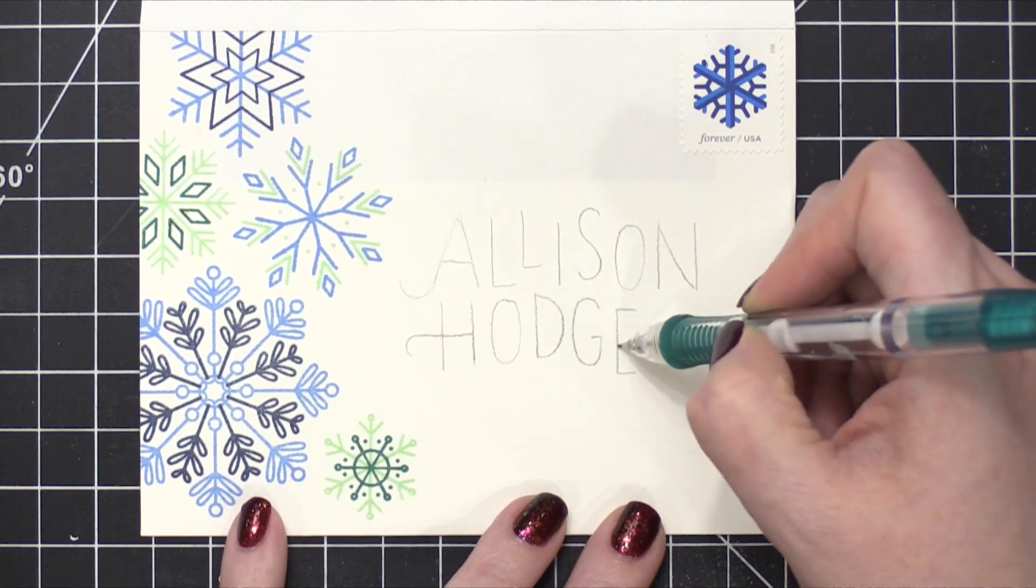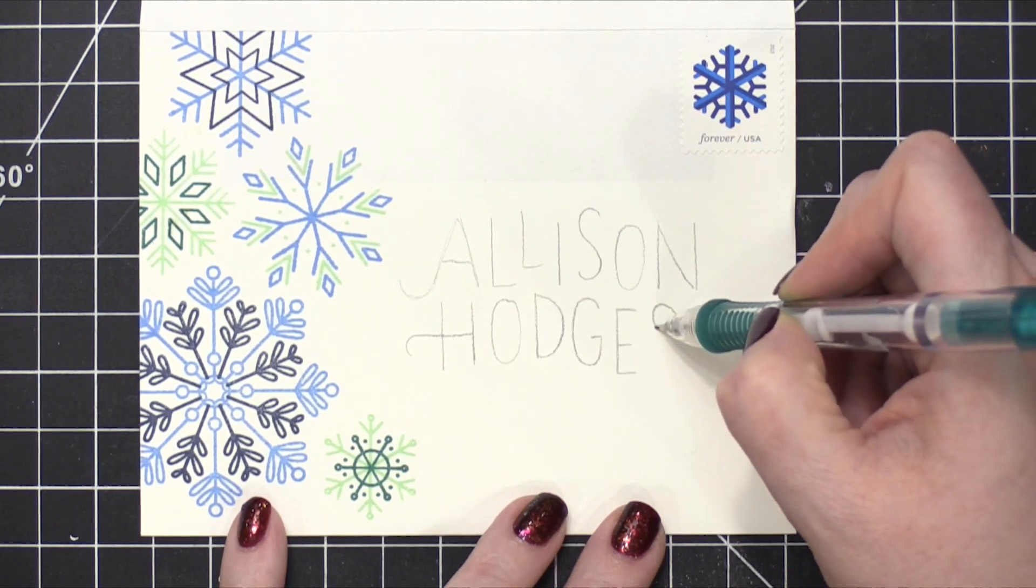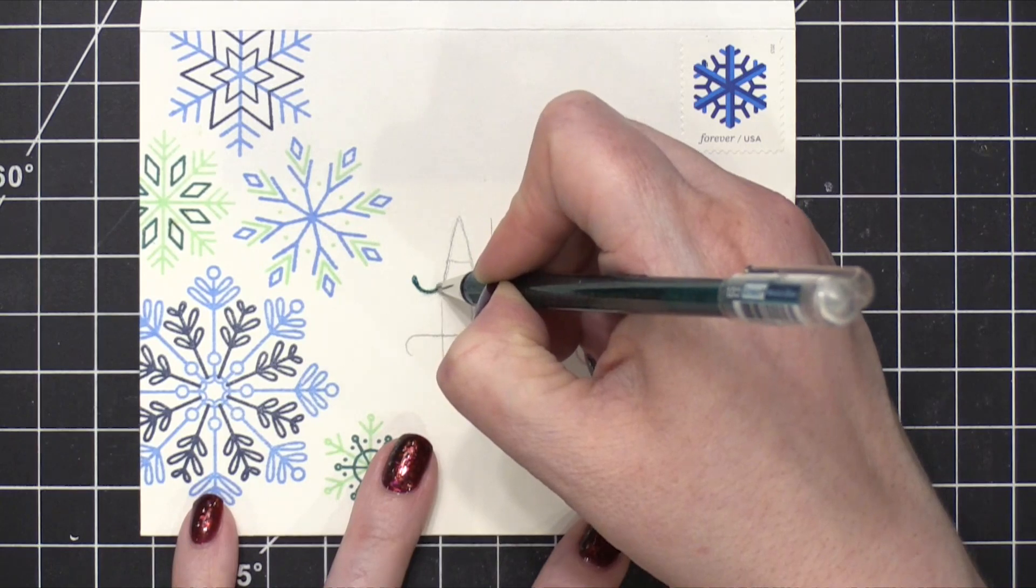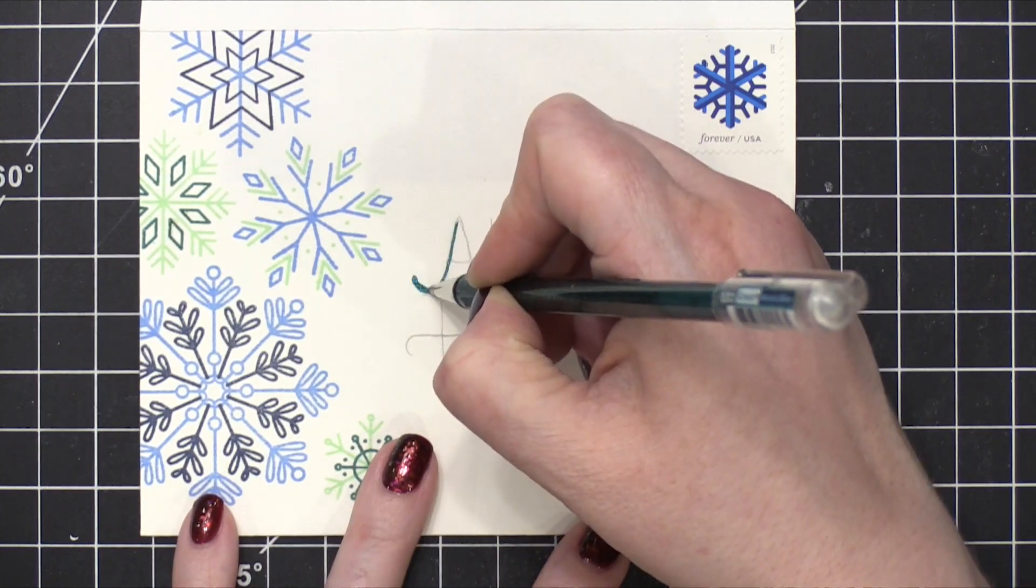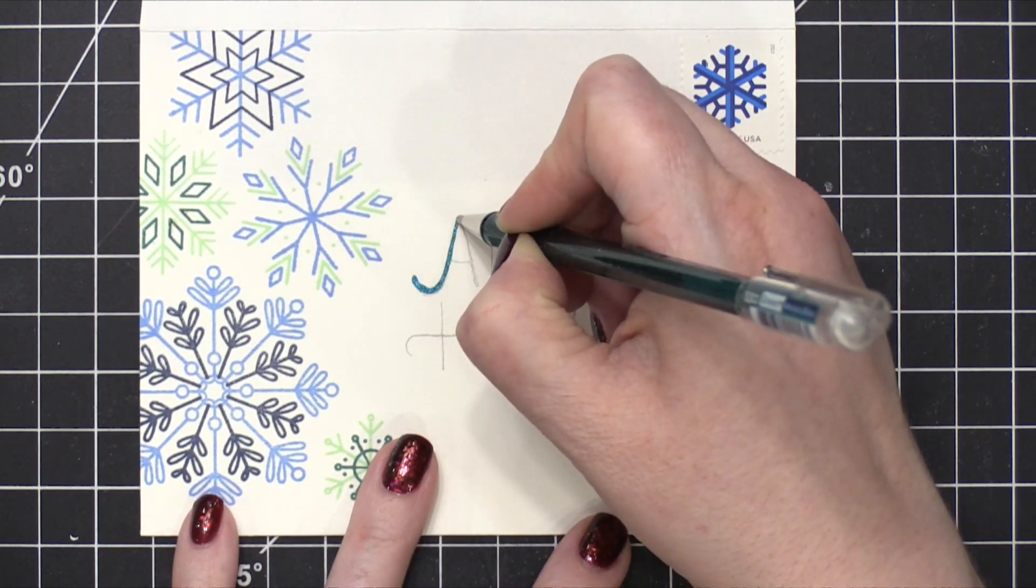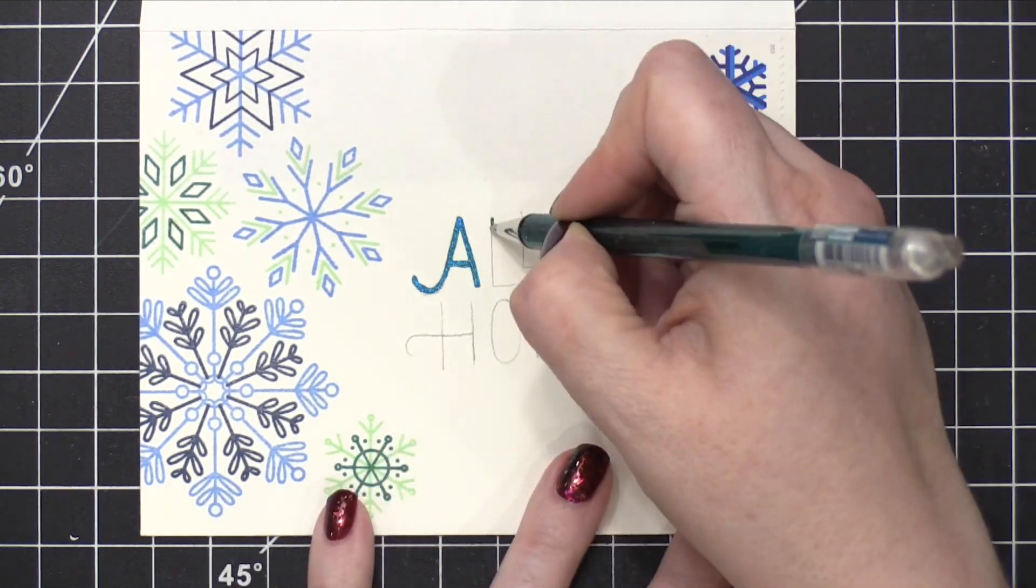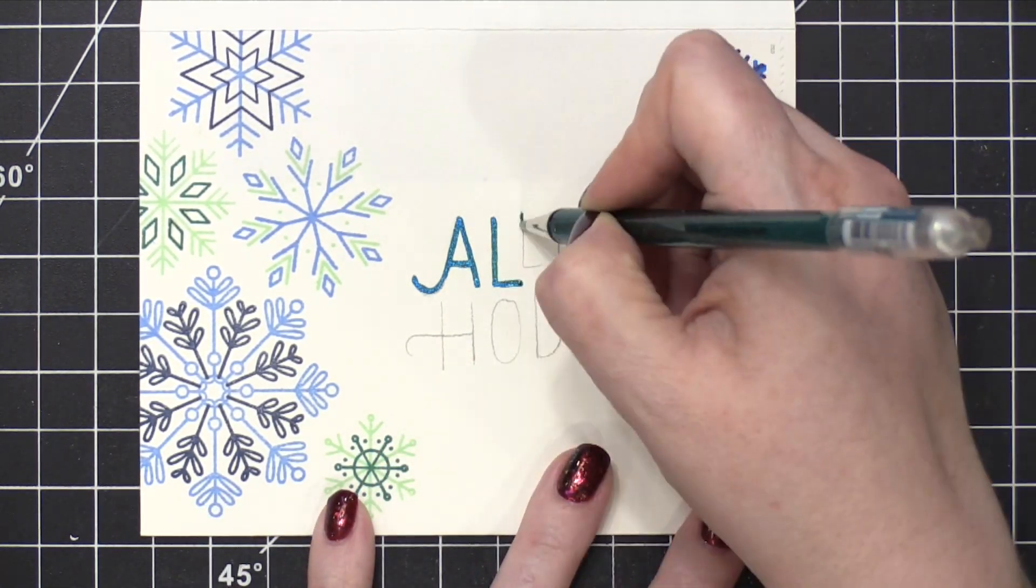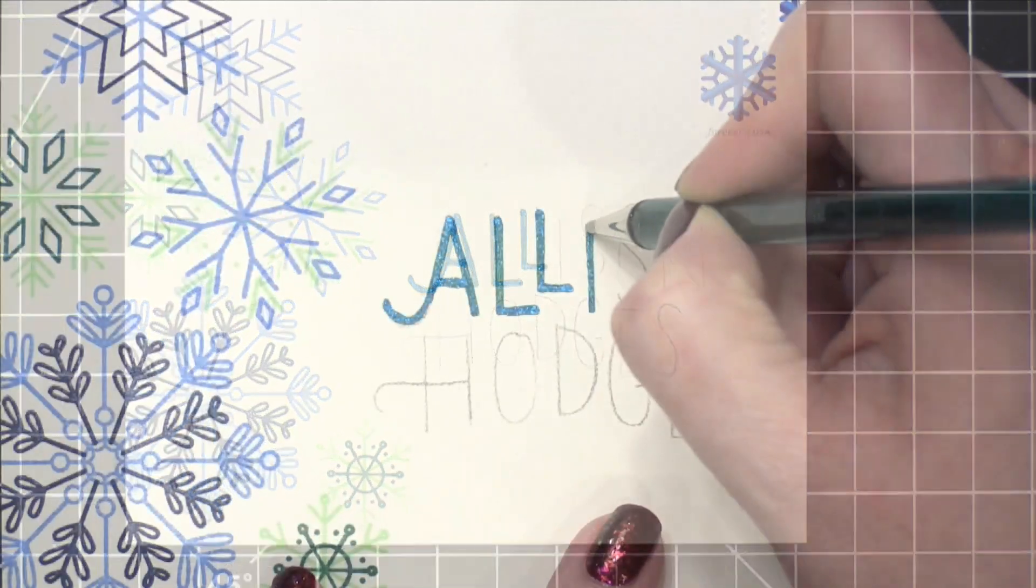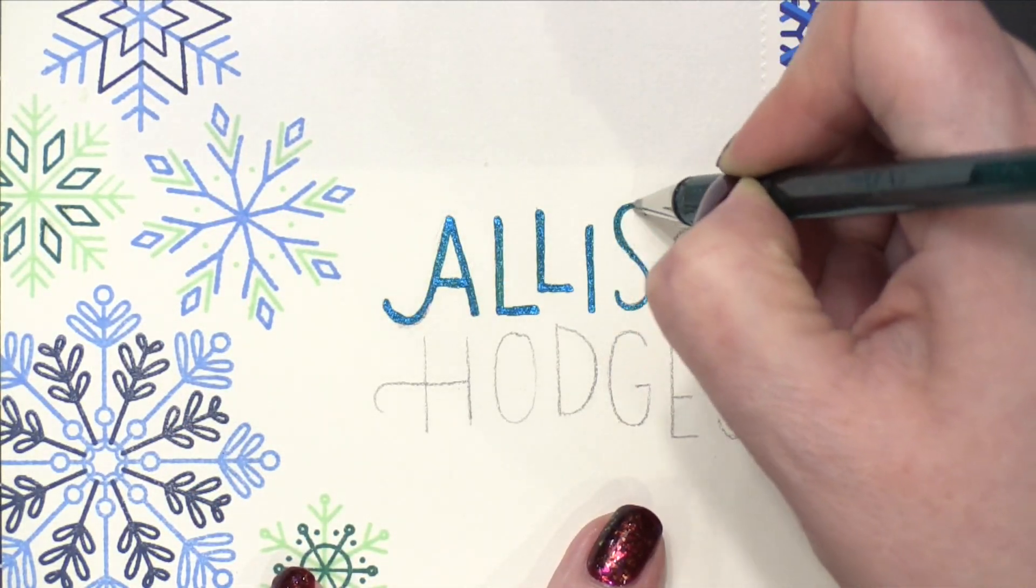I added a blue postage stamp in that top corner and then penciled on the recipient's name. I'm using a gel pen to write her name and address. And since this does take a little bit of time and all I'm doing is just writing, I'm going to speed it up and turn on a little bit of holiday music for you to enjoy. I'll be back shortly.